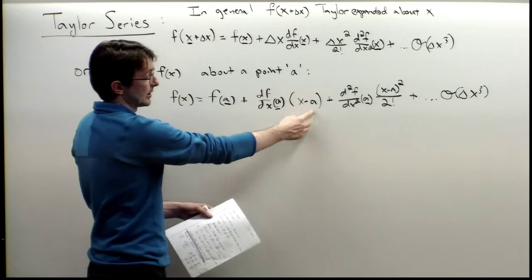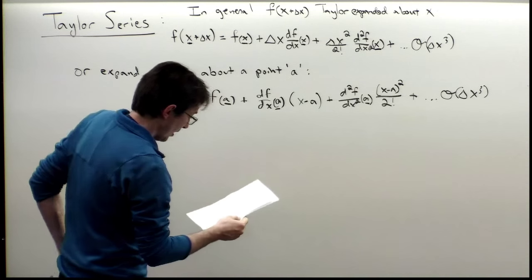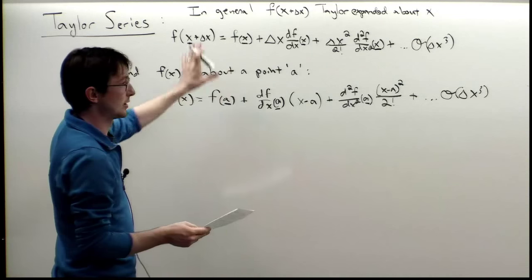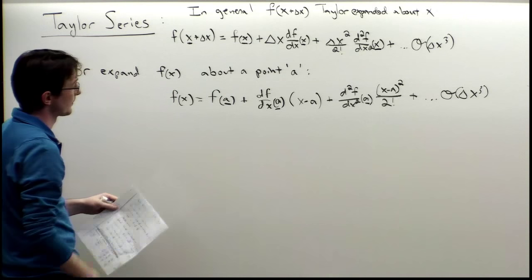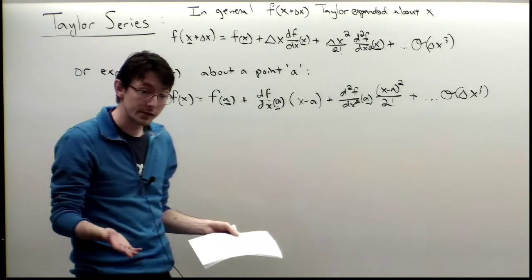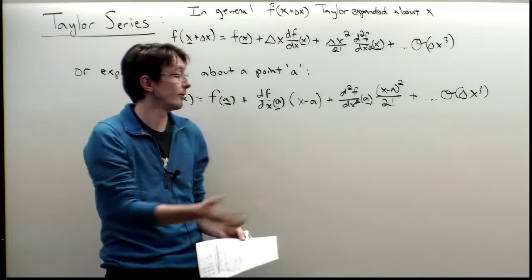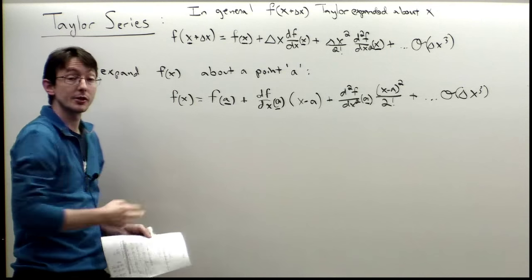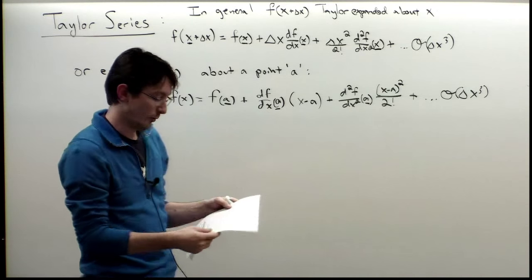So f(x) is approximately equal to f(a) + df/dx evaluated at a times (x - a) + d²f/dx² at a times (x - a)² / 2! + order delta x cubed. Please convince yourself these are equivalent ways of writing the same thing — just with different notation for the base point.